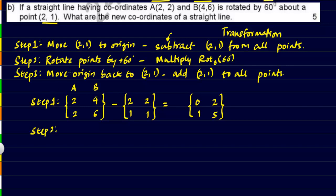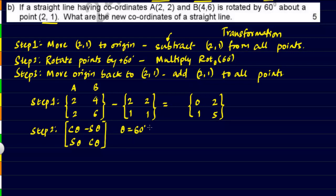For step 2, we apply the rotation matrix. The rotation matrix is: cos θ, −sin θ in the first row and sin θ, cos θ in the second row. We'll take θ as positive 60 degrees, assuming anticlockwise rotation. If clockwise is specifically mentioned, we take the angle as negative and the matrix changes accordingly.